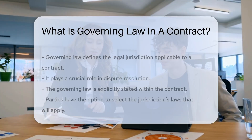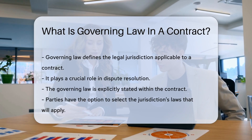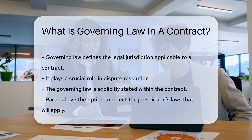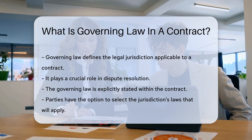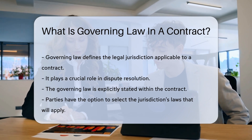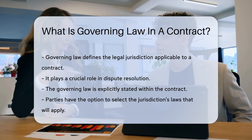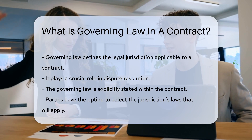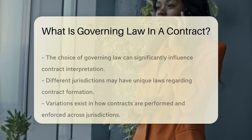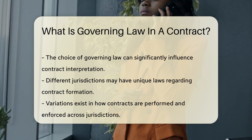Governing law refers to the legal jurisdiction that applies to a contract. This concept is crucial in determining how disputes are resolved. The governing law is specified within the contract itself. When parties enter into a contract, they often choose which jurisdiction's laws will apply. This choice can significantly impact the interpretation of the contract.